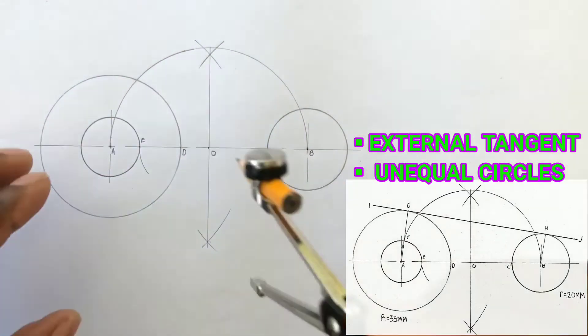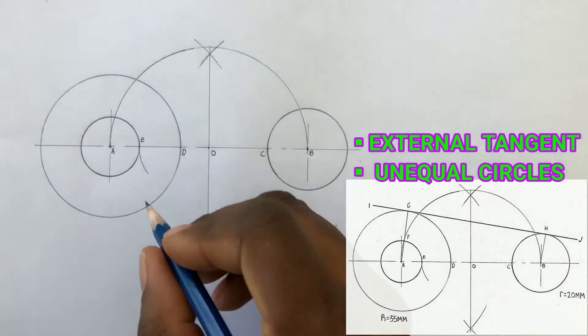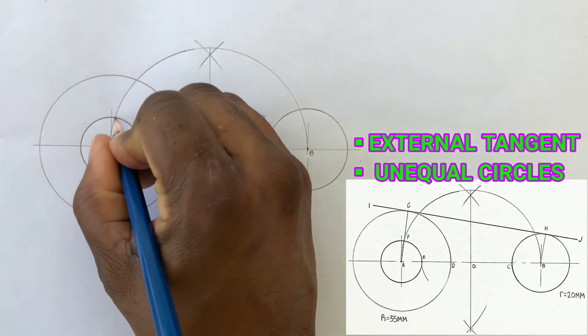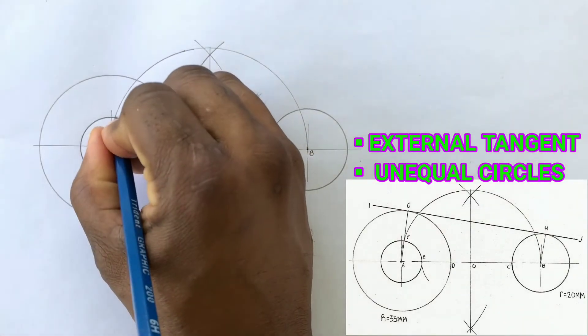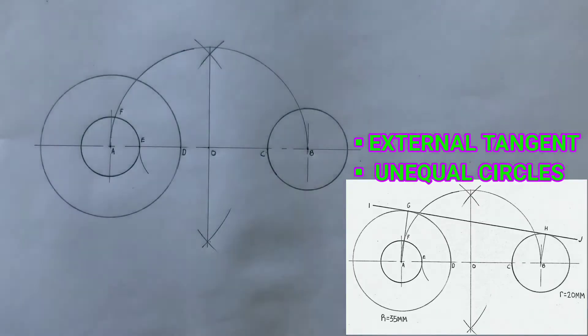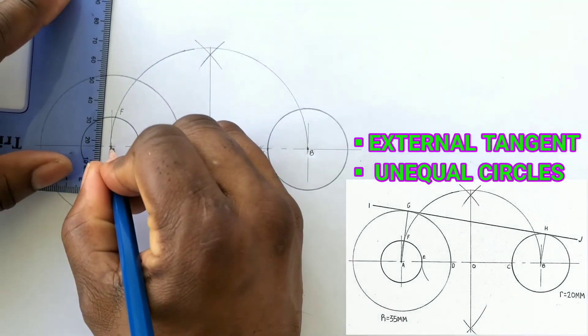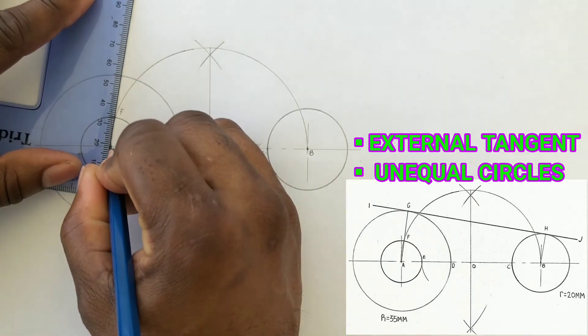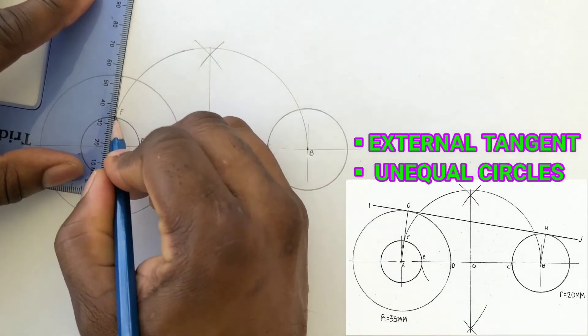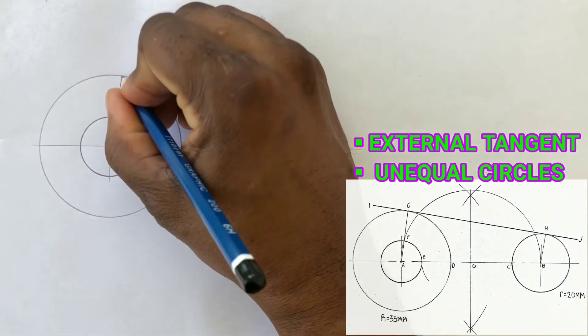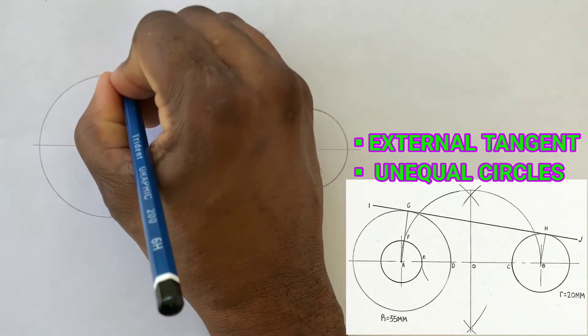The semicircle intersected the small circle on the left giving us point F. Label point F. From point A we will draw a line through point F to give us point G on our larger circle. Label point G.